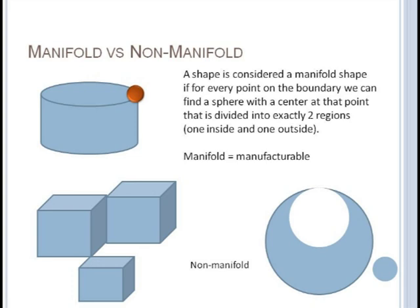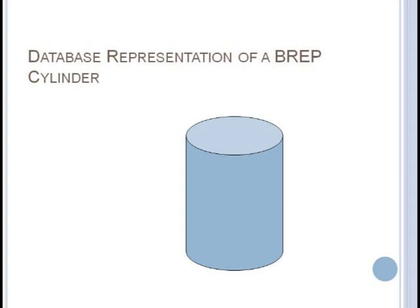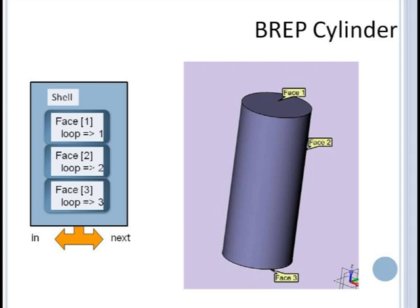So now let's look at a typical BREP database using a cylinder as our example. We assume here our cylindrical shape consists of three surfaces sewn together. When a surface like the middle tube wraps back around on itself, we say the surface is closed and the edge where they meet is called a seam. Our cylindrical shape consists of a single shell.